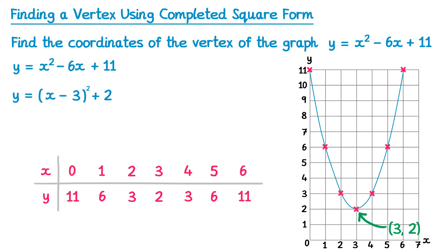But this seems like an awful lot of effort to go to each time. Isn't there a quicker way? It turns out there is a better method, and if we look back through our steps we'll be able to spot why. The vertex is at (3, 2), right at the bottom of our graph. Because it's at the bottom, it must have the lowest y coordinate, and you can see that 2 is the lowest y value.